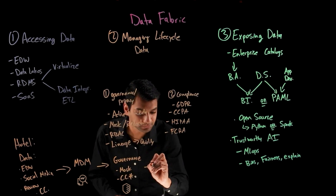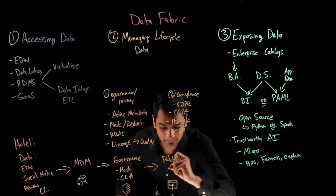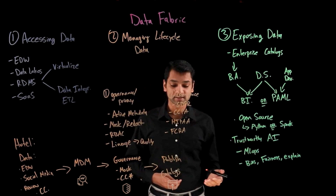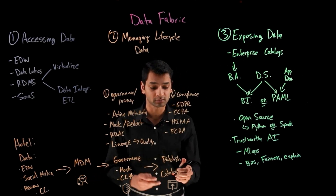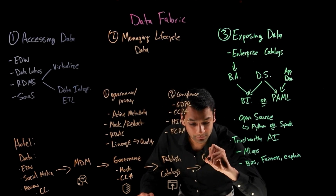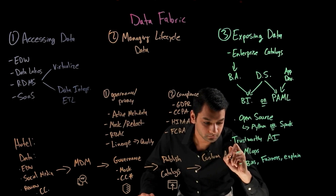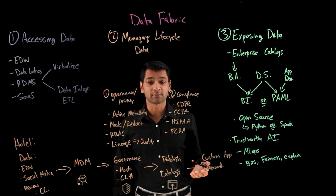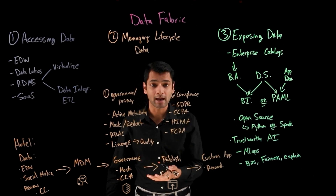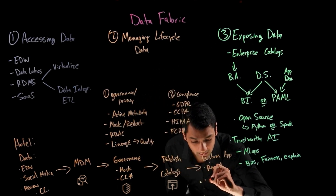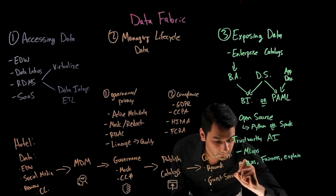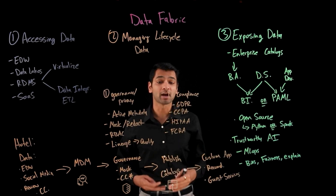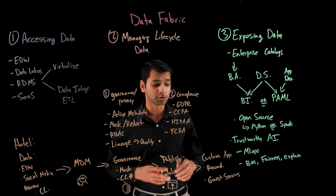Once we've governed our data sets, we can publish them into our catalogs. Developers or business analysts can then shop for the data they're looking for through these catalogs and start building custom applications — such as a recommendation engine that recommends specific offers to customers based on their purchasing habits and buying behaviors, or a guest services application that allows hotel staff to greet customers in a more personalized way and provide a more relevant experience.